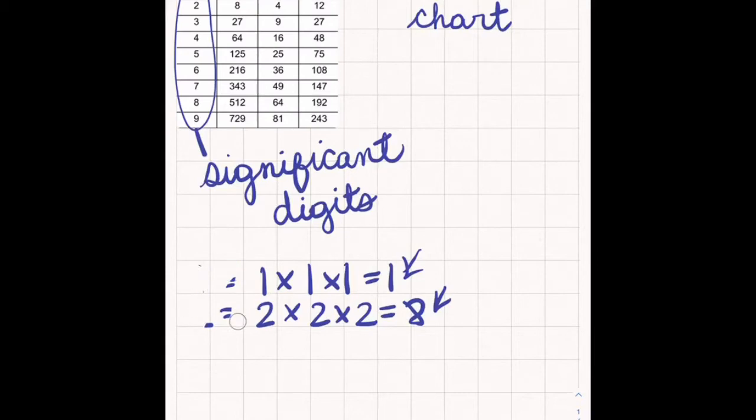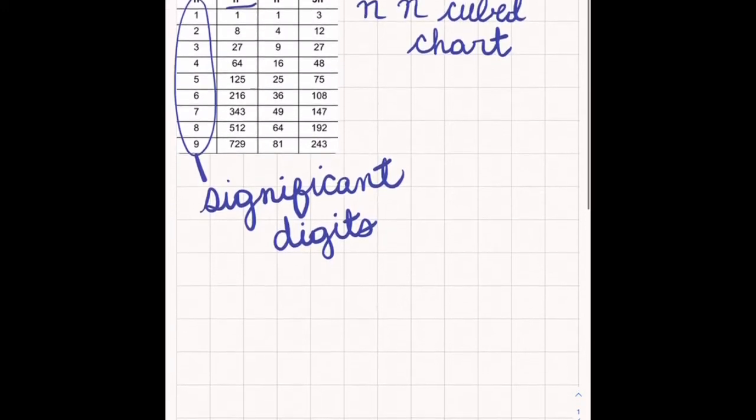And 7 times 7 times 7 is 343. And 8 times 8 times 8 is 512. And 9 times 9 times 9 is 729. So those are our answers to our significant digits.